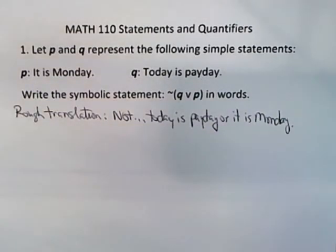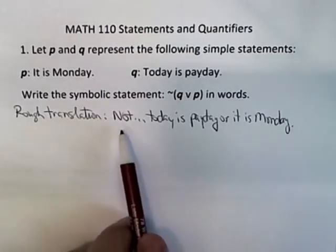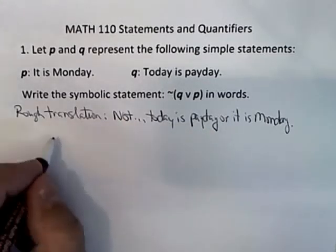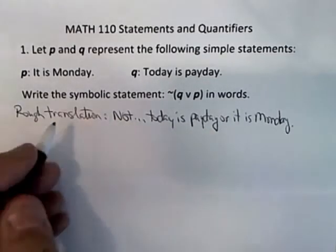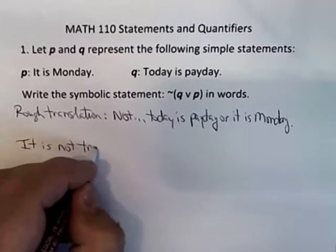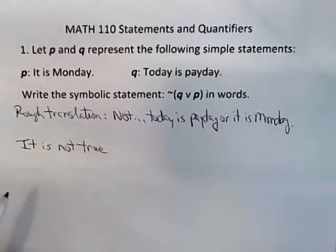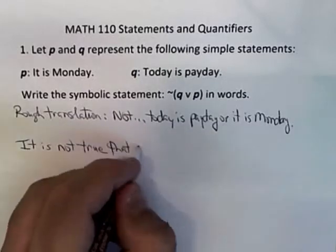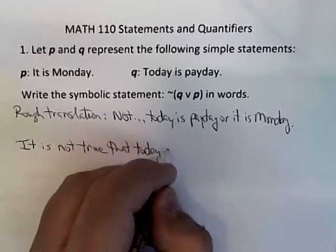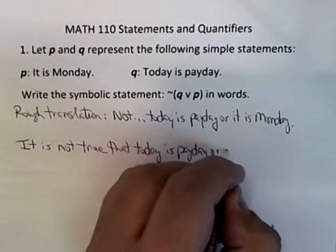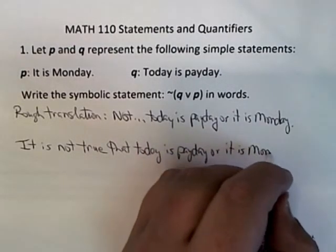Now that's a rough translation. You want to tighten it up and make it sound grammatically correct. Instead of saying just 'not,' fancy it up: say 'it is not true that.' Then go ahead and say what you had: 'today is payday or it is Monday.'